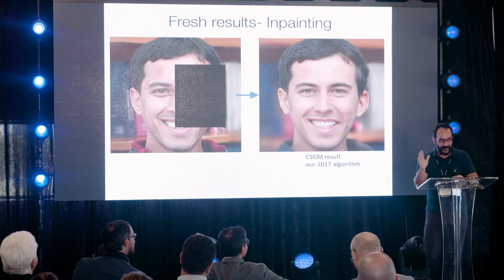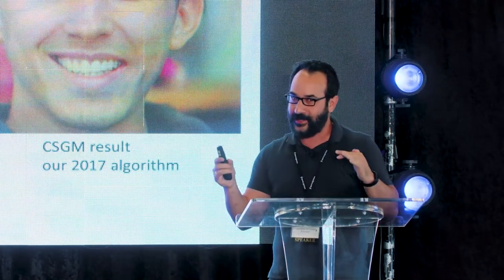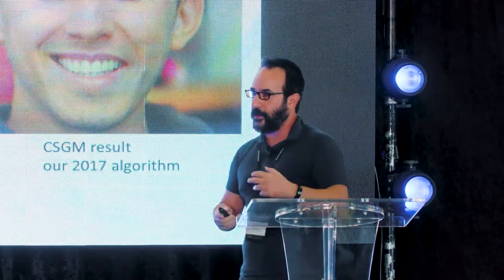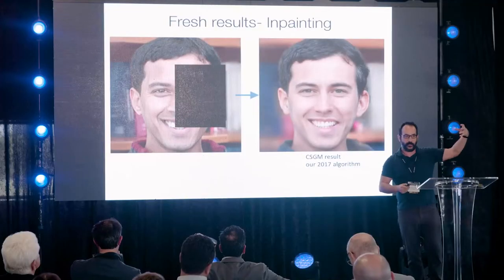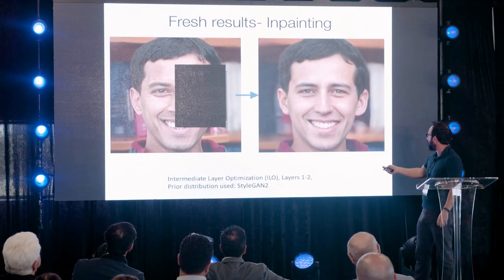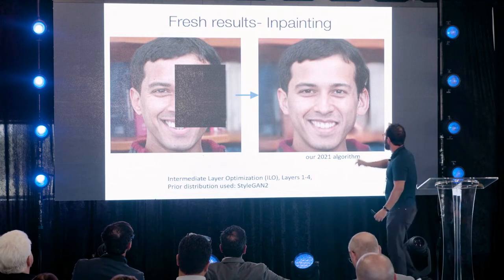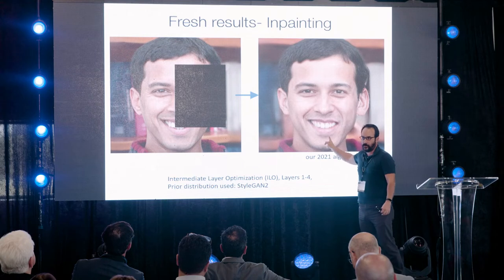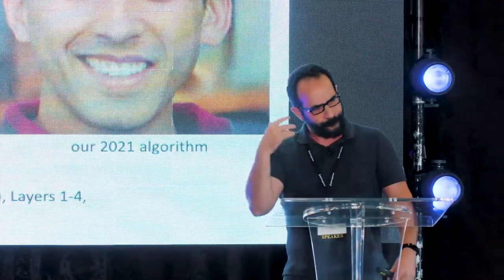We came up with a new algorithm that goes inside the generator — inside the intermediate layers — and optimizes them rather than just the input knobs. Optimizing layers one and two gives a slightly better result. Optimizing layers one through four gives our 2021 algorithm, which produces an image that if you know Vijay, you'd totally say that's him. There are still some artifacts, but if someone gave us a better generator, this would improve further.